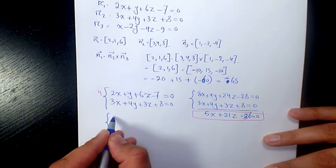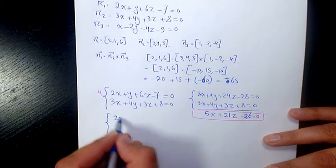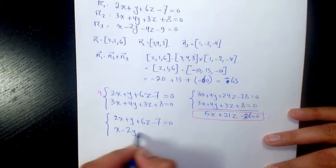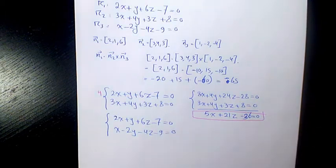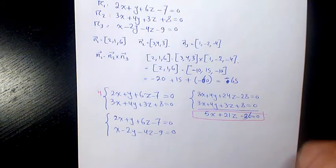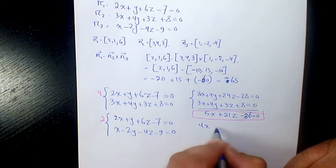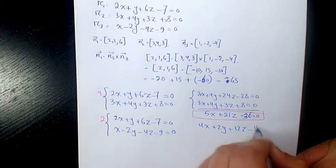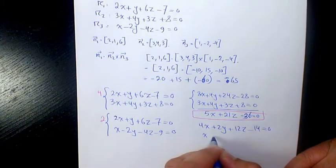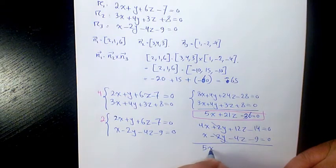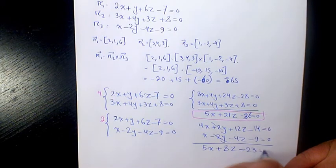Keeping that result, we use the equations 2x plus y plus 6z minus 7 equals zero and x minus 2y minus 4z minus 9 equals zero. Multiplying the first by 2: 4x plus 2y plus 12z minus 14 equals zero. Adding with x minus 2y minus 4z minus 9 equals zero, the y terms cancel, giving 5x plus 8z minus 23 equals zero.